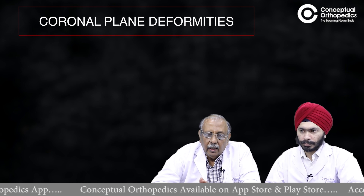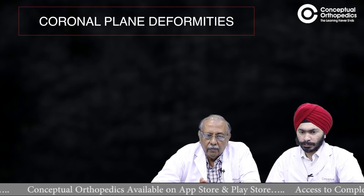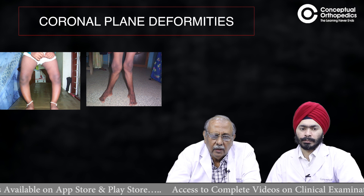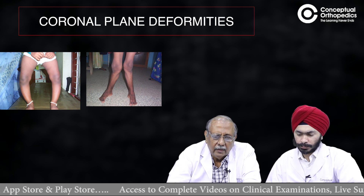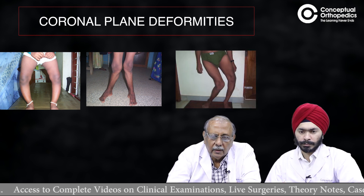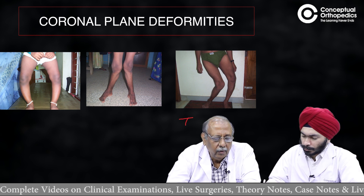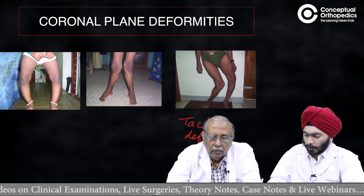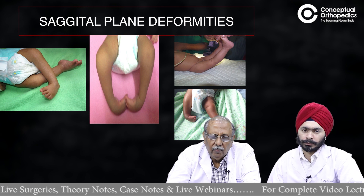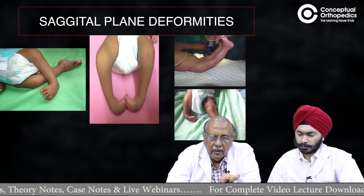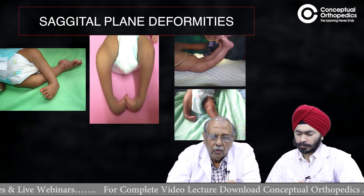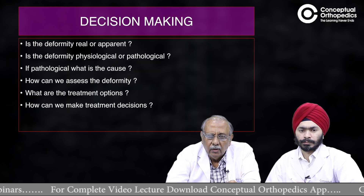Angular deformities around the knee are common problems asked in both theory and clinical exams. Genuvarum and genuvalgum form the majority of these angular deformities. The first image shows a child with genuvarum, the second shows genuvalgum, and the third shows a tackle deformity, also called a windswept deformity. Flexion and extension deformities also exist but are less commonly tested, so we will concentrate on coronal plane deformities.